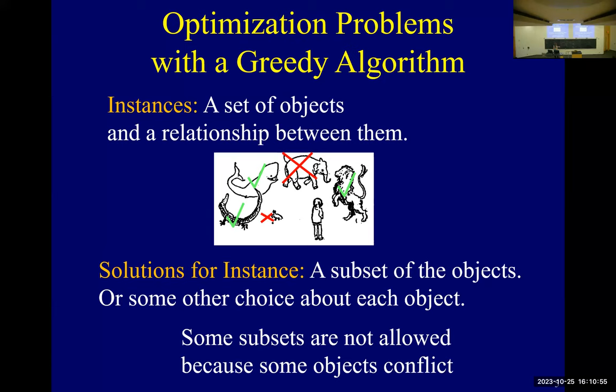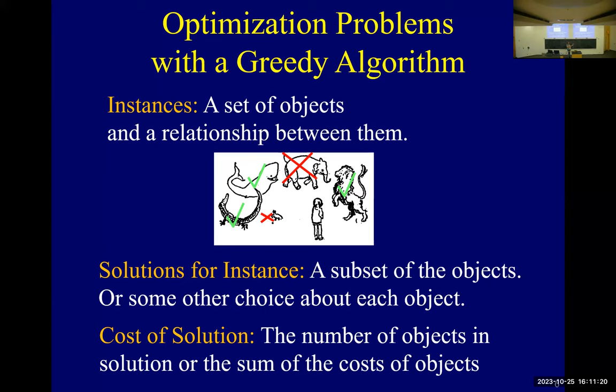The solution here is a subset of the objects, so you're going to decide which ones to take. And there's some underlying relationship between them that is hard to understand but you're not worrying about that. There's a solution, it's a subset. Some subsets are allowed because the objects you take don't conflict. Some subsets aren't allowed. For example, if you take the lion, you can't take any zebras. You might be able to take an elephant because lions don't bother elephants. What's the cost of the solution?